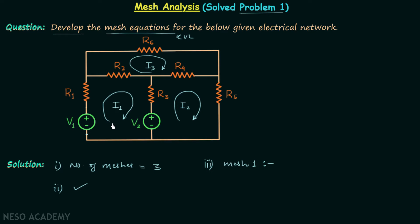Moving from this point in the direction of current I1, we have one voltage source providing V1. There is a rise in potential, so we write plus V1. Then we have resistor R1, through which current I1 is flowing. The resistor dissipates power, so there is a voltage drop equal to I1 multiplied by R1, giving a negative sign: minus I1·R1.